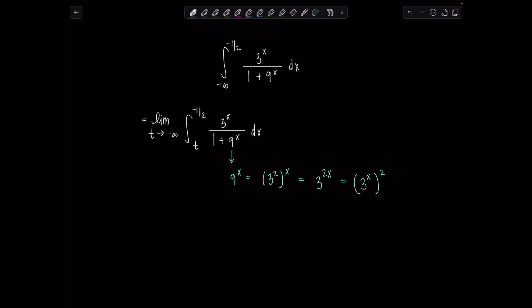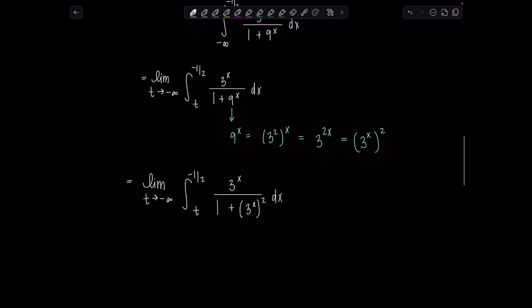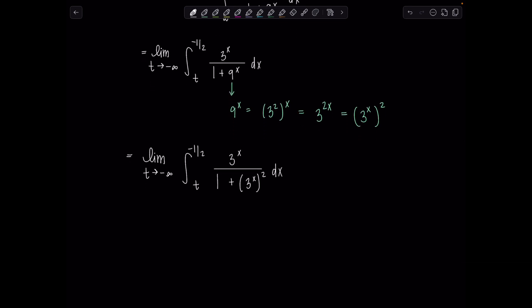That's helpful because hopefully now you can see we can make a substitution. So we've got limit t goes to negative infinity integral t to negative one-half 3 to the x over 1 plus 3 to the x squared dx. Do you see? We're going to make a u substitution now and I'm going to let u be 3 to the x.